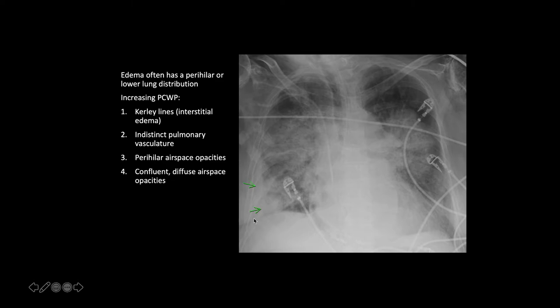Here's a more severe example of pulmonary edema; the arrows are pointing to a pleural effusion. Other clues that a process is pulmonary edema compared to other diffuse interstitial or airspace processes: these patients often have cardiomegaly and pleural effusions, and the finding would also be acute if you have prior studies to compare with.